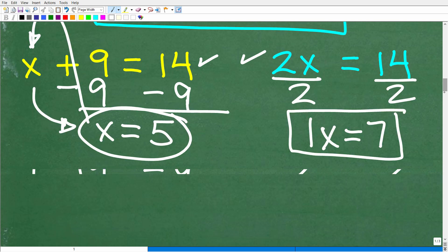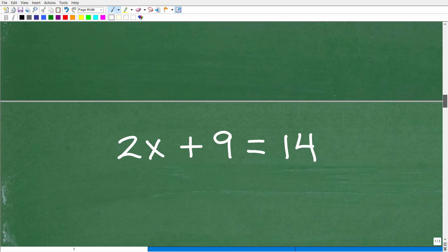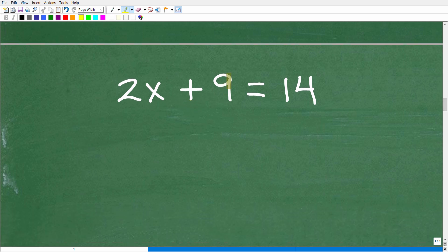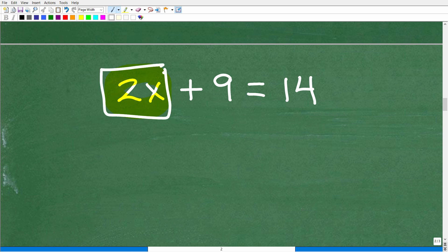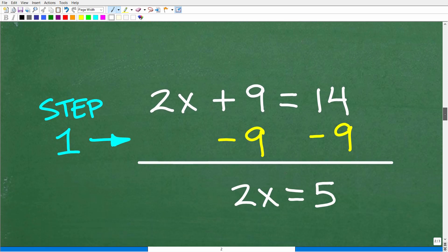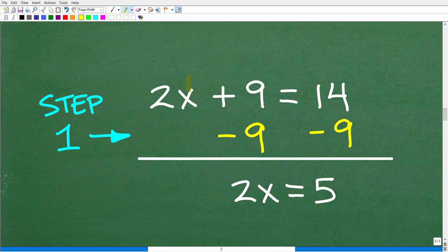Okay, so here is how it works. So 2x plus 9 is equal to 14. When you're solving two-step equations in algebra, the first thing that you need to do is isolate this part of the equation. So we want to get this on one side of the equation, 2x. And in order to do that, well, I can simply subtract 9 from both sides of the equation. Alright, so let's go ahead and do that right now. So this is step 1. Okay, so remember this is a two-step equation. And the first step is to isolate this part of the equation right here, the part that has the variable in it.